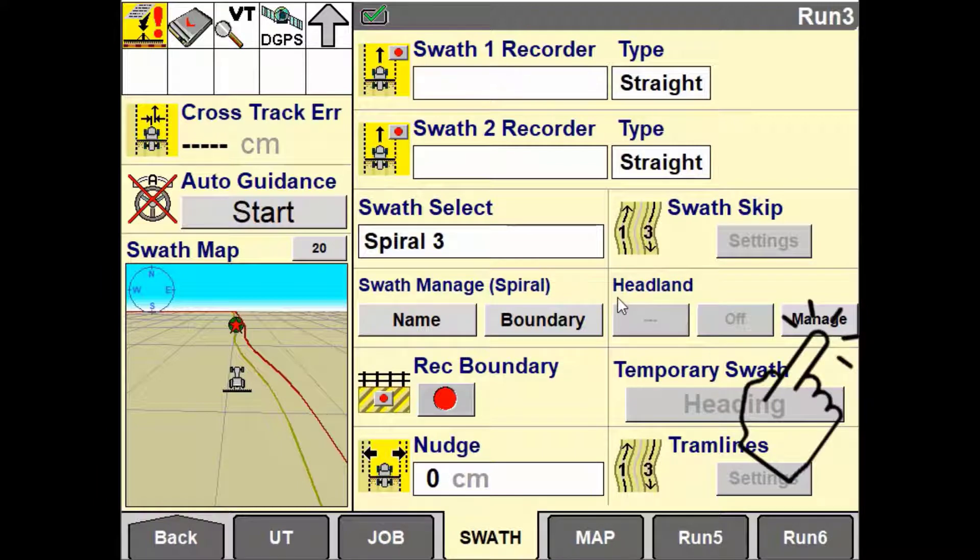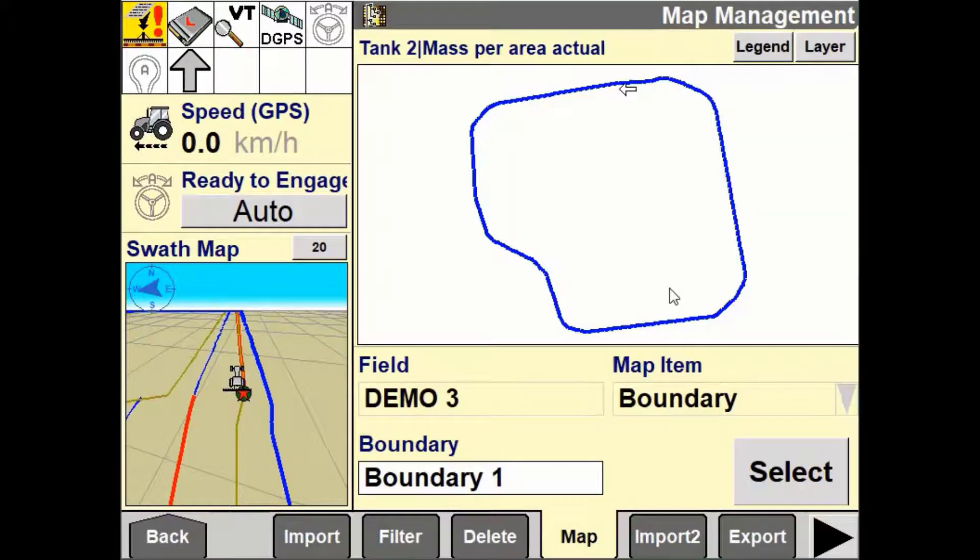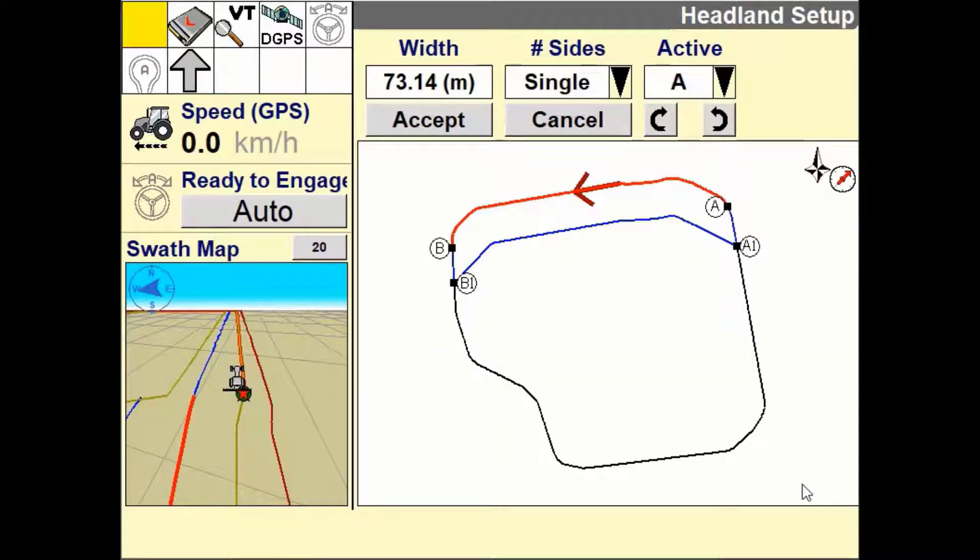The next option you will have is to define which boundary you want to create the headland for. Use the arrows left and right until the desired boundary is selected then press select. Use the width option to define how wide your headland needs to be.